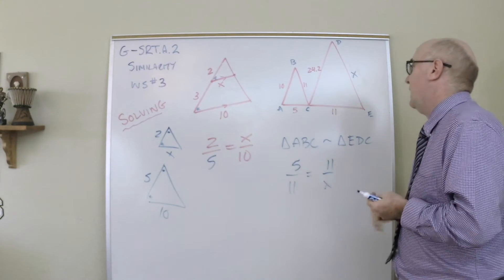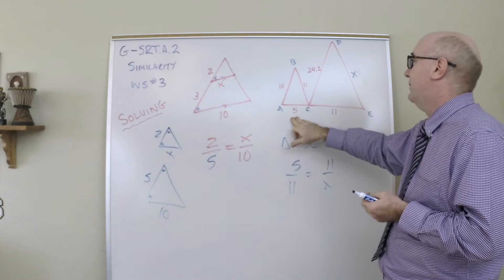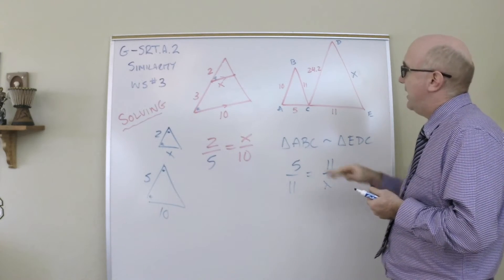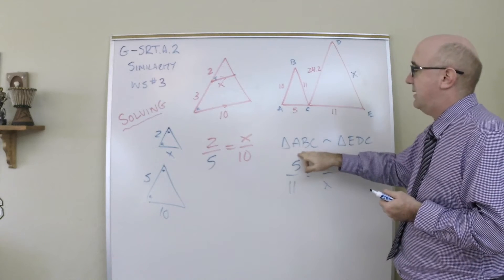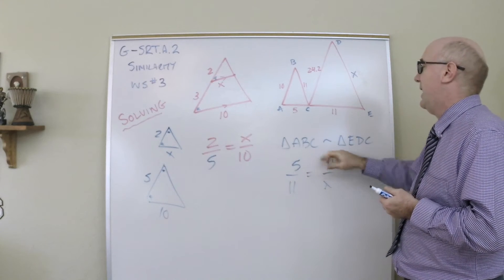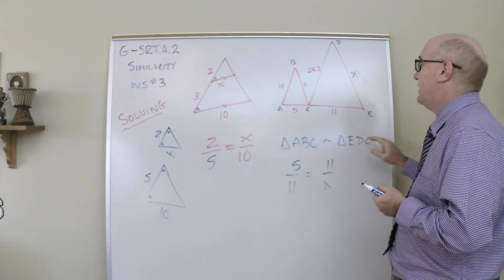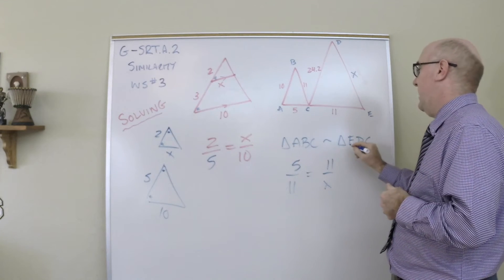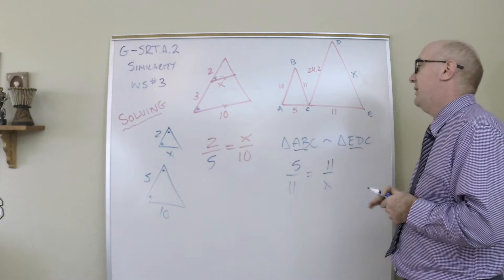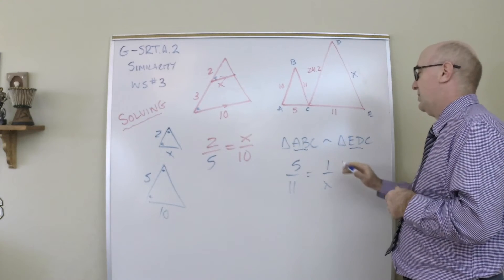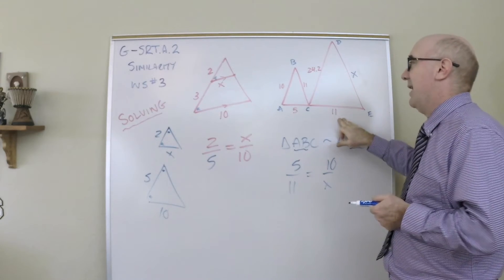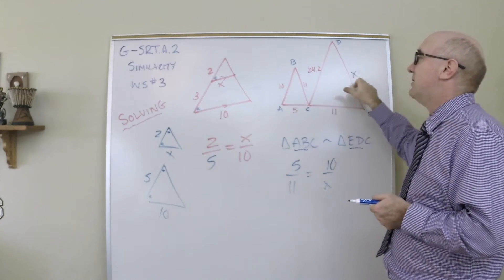And so the smallest is the five to the eleven. And then the other thing you can use is notice it's ABC and EDC. So ED is to match up, ED is to match up with the AB. So actually, to solve this, it would go five is to eleven as ten is to x.